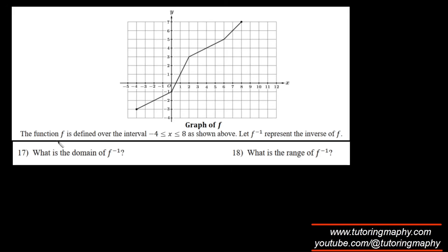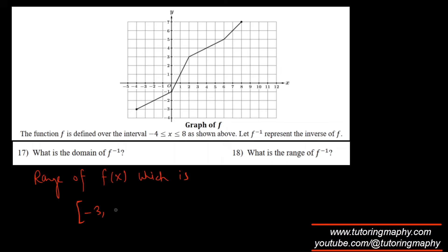The domain of f⁻¹ equals the range of f, since domain and range interchange. The range of f (the y-values) goes from -3 to 7, so the domain of f⁻¹ is [-3, 7]. The range of f⁻¹ equals the domain of f, which we can read directly: it is [-4, 8].